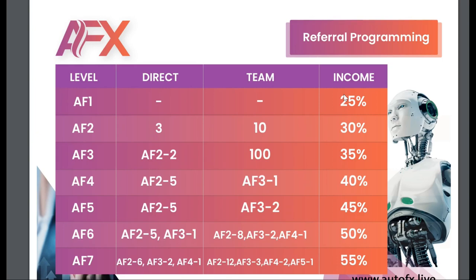The next rank is rank two (AF2). You need to have referred three people directly and have a total of 10 people in your team — that includes both the people you referred directly and the people they also introduced to the business. Once you are a level two member, you earn 30% of your personal referral activation fee instead of 25%. So if you refer someone at rank two, you get $24, which is 30% of $80.